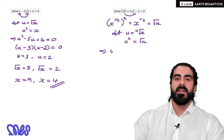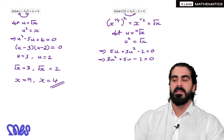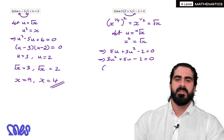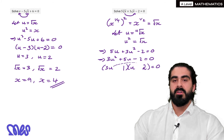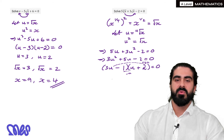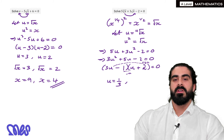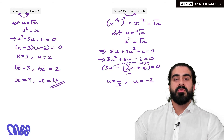So when we rewrite it we get 5u plus 3u squared minus 2 equals 0, which we rearrange to 3u squared plus 5u minus 2 equals 0. Then we factorize: it has to be 3u and u, and 2 and 1. Putting 2 in the first factor and 1 in the second, 3u times 2 gives 6u and 1 times u gives u. To make plus 5u we need plus 6u minus u, so the signs are plus and minus. We get 3u minus 1 equals 0, giving u equals 1 third, and u plus 2 equals 0, giving u equals minus 2.